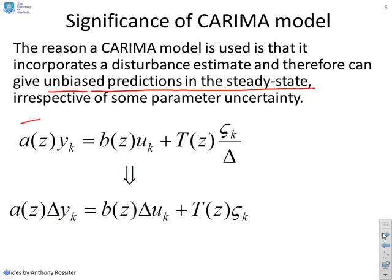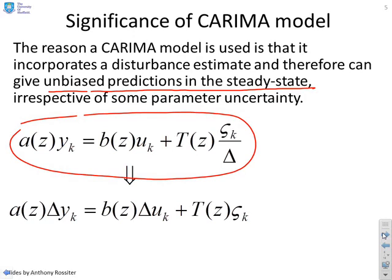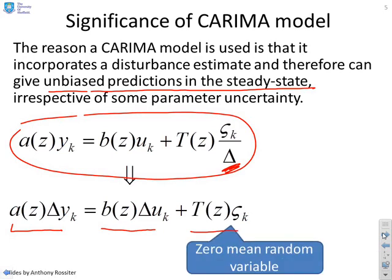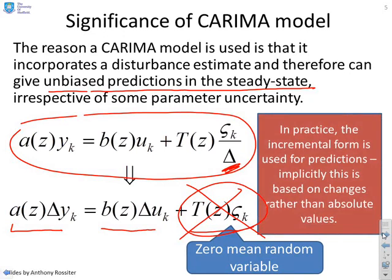Here's the original CARIMA model: a(z)y equals b(z)u plus t(z)zeta over delta. What we do is multiply the whole way through by this delta operator. So you see we get a(z)delta times y, b(z)delta times u, and t times zeta. The advantage of this is because zeta is a zero-mean random variable, then this term over here is going to be a zero-mean random variable, and ultimately we're therefore going to be able to ignore it. This incremental form basically means that we can get unbiased predictions in the steady state.